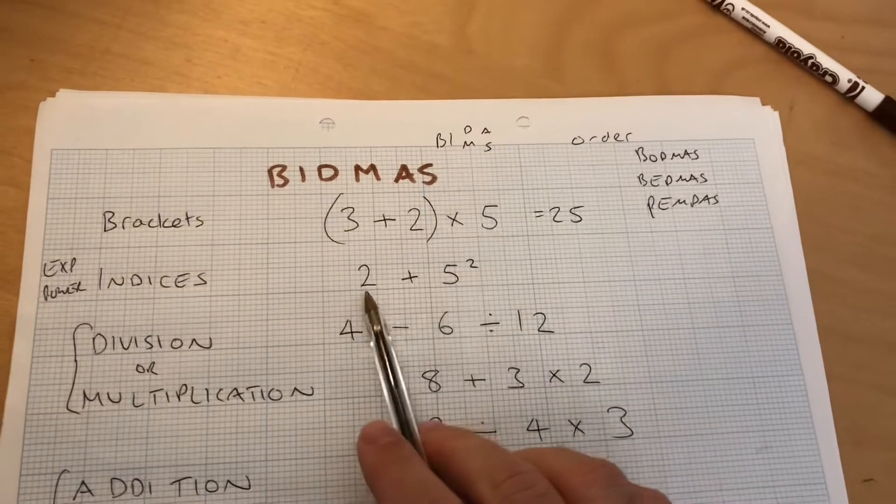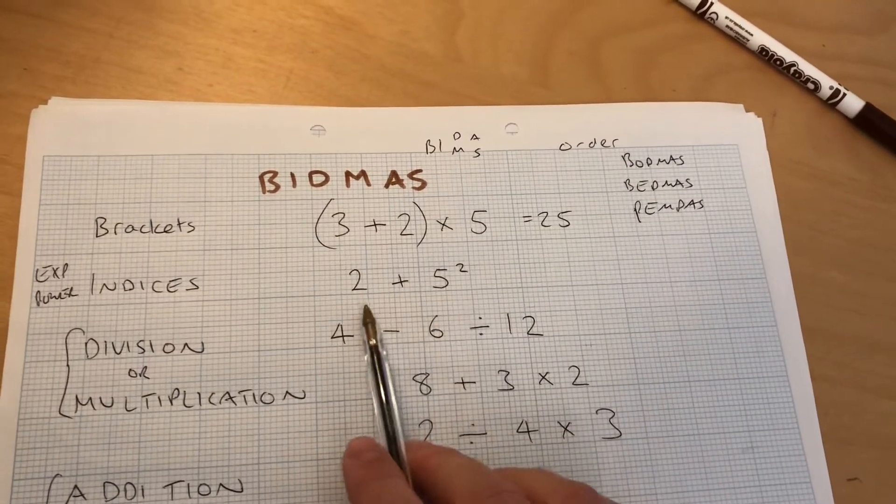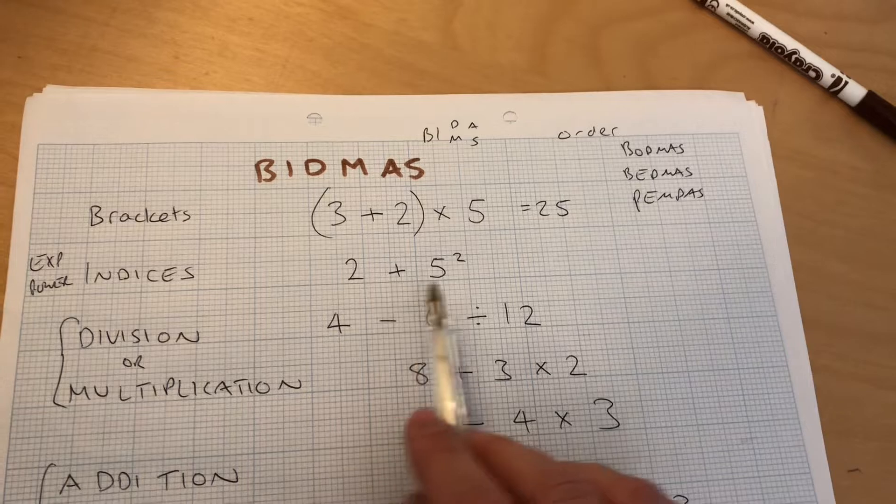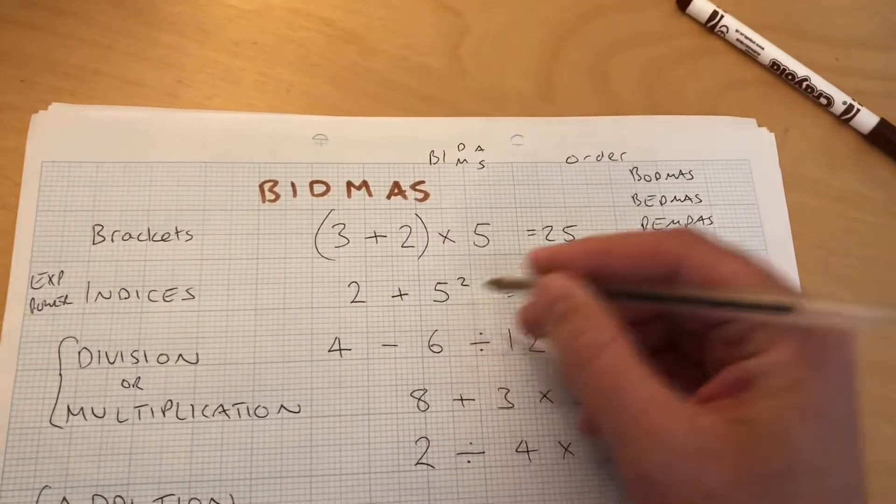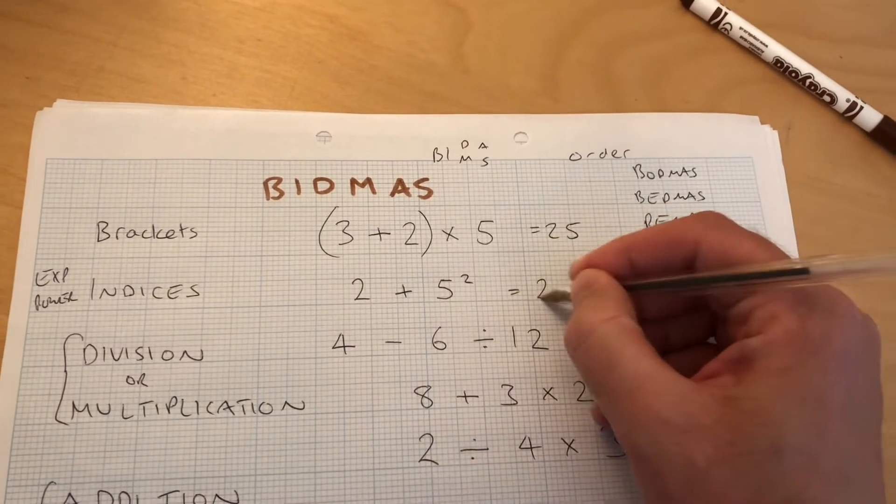And then indices here, it's 2 plus 5 squared. I don't add first, so I don't get 7 squared. I square the 5, and then I add the 2. So I'm going to get 5 squared, which is 25, and add the 2.